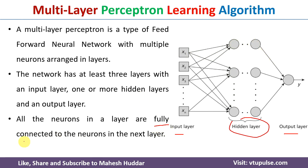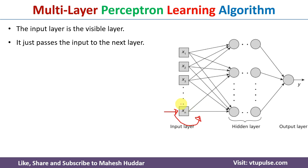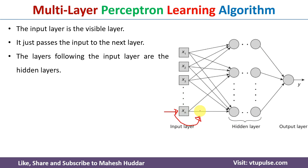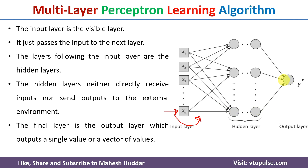The input layer is the visible layer where input is given to the network. It does not perform any computation — whatever input is received is simply transferred to the next layer without modification. The hidden layers do not receive input directly from the environment nor output to it; they receive input from the previous layer, perform some modification, and pass the output to the next layer. The output layer receives input from the last hidden layer, performs computation, and outputs the result to the environment.